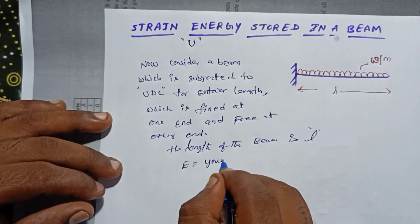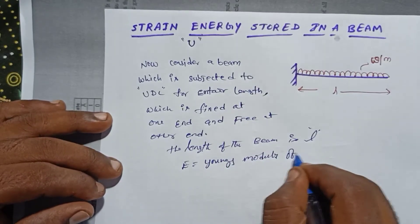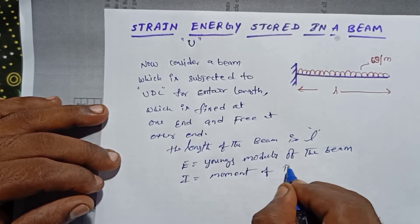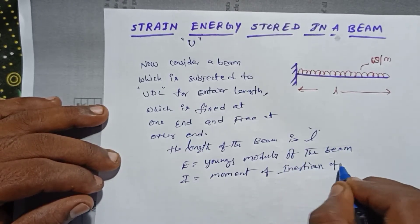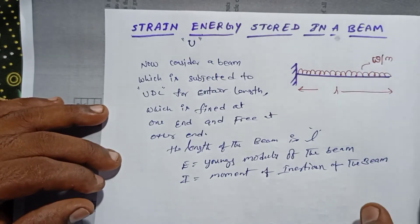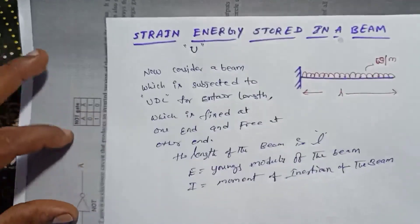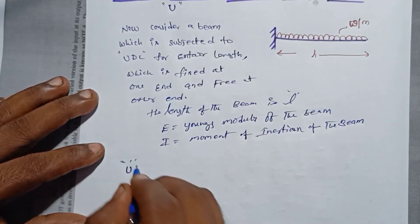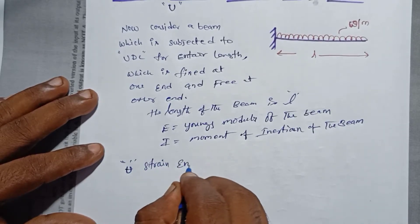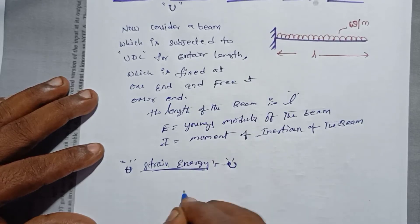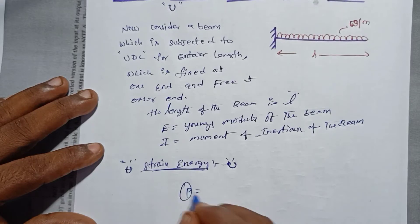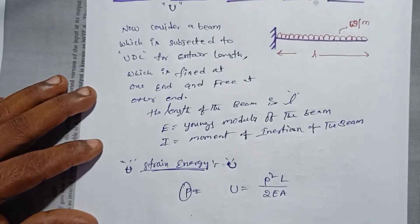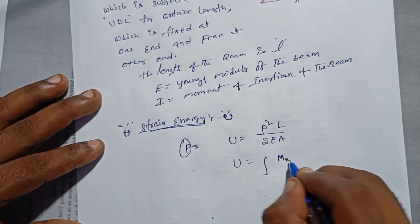E is equal to Young's modulus of the material of the beam. I is equal to moment of inertia of the beam. We know that strain energy is calculated using three formulas. The first formula is for axial load: strain energy U = T²L / 2EA.